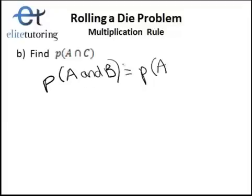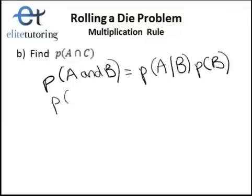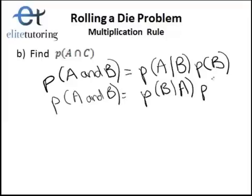So the probability of A and B is the probability of A given B times the probability of B. I could also write this as the probability of A and B equals the probability of B given A times the probability of A. Since it doesn't matter if I put A and B or B and A, the order does not matter here.